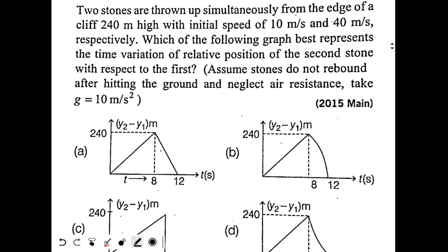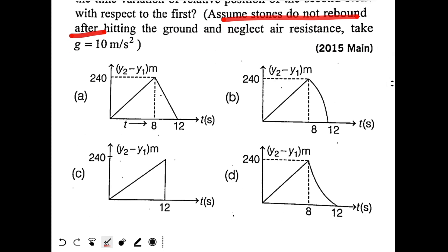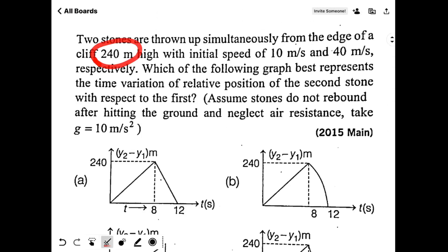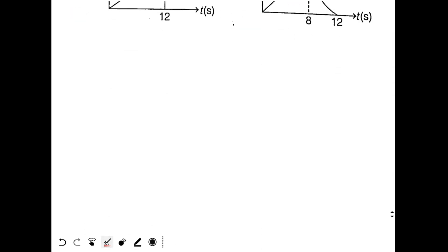Okay, see this question from IIT JEE Mains 2015. Two stones are thrown up simultaneously from the edge of a cliff 240 meter high with initial speed of 10 meter per second and 40 meter per second respectively. Which of the following graph best represents the time variation of relative position of the second stone with respect to first stone? Assume the stones do not rebound. Neglect air resistance. All graphs are given. How do we solve this?